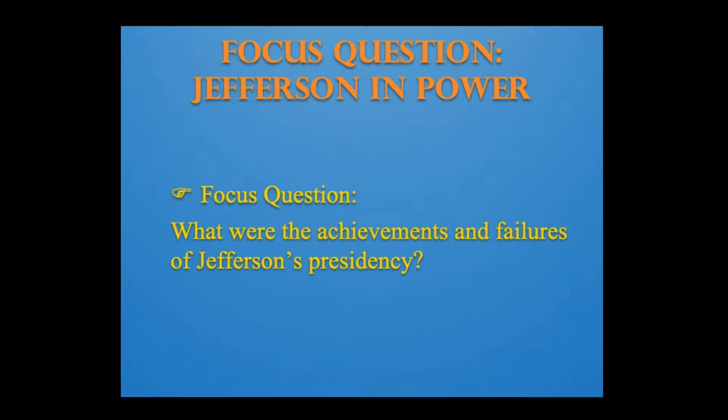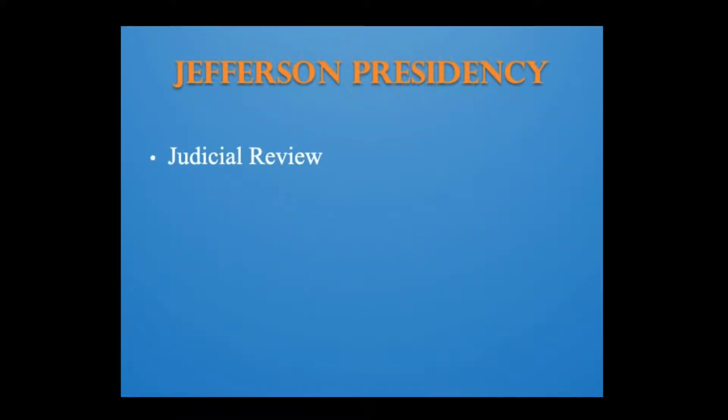This lecture covers the topic Jefferson in Power. The focus question is: what were the achievements and failures of Jefferson's presidency? At Jefferson's inauguration in March 1801, he tried to conciliate his Federalist opponents by claiming that both parties shared the same principles even if they disagreed in their opinions. Jefferson vowed to reduce government, free trade, ensure freedom of religion and the press, and avoid entangling alliances with other nations. He sought to dismantle much of the Federalist edifice and prevent the kind of centralized state Federalists promoted.